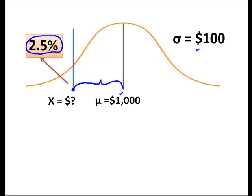Since I know that this whole side of the distribution is 50%, if I take 2.5% away from 50%, what I end up with is 0.4750% of the data between this unknown value of x and the mean of the distribution. Since we're inside of the curve,